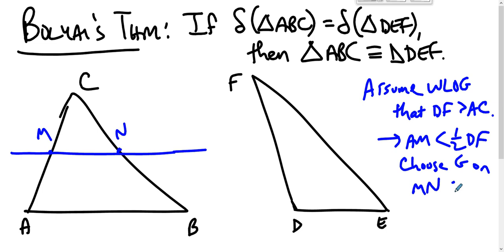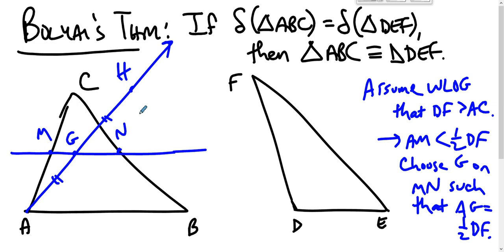such that AG is half of DF. That's where the genius is—there's some point G, right? There's some point G such that AG is half of DF, and then we find a point H such that AG is half of DF and GH are congruent. So now AH is congruent to DF.